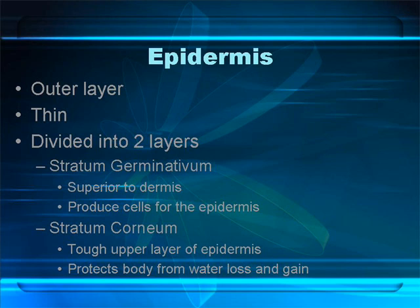The epidermis is a very thin layer, and it itself is divided into two more layers, referred to as strata. The first layer, the stratum germinosum, sits superior to the dermis — it's the layer that actually sits on the dermis. The stratum corneum is the layer at the top of the epidermis, and if you look at your hand right now, the layer you're seeing is the stratum corneum. The stratum germinosum is underneath that.